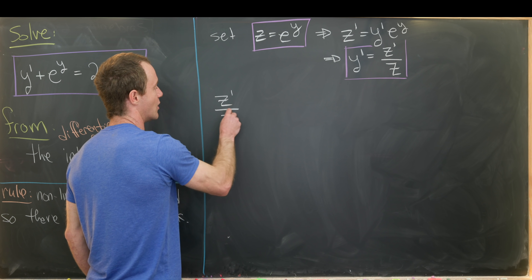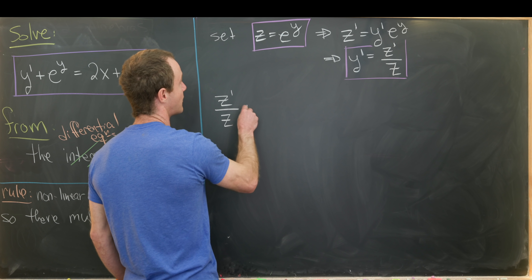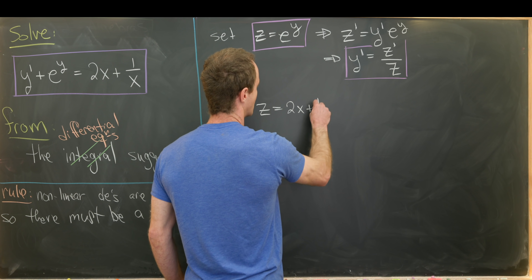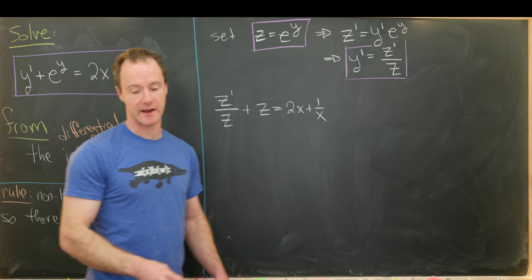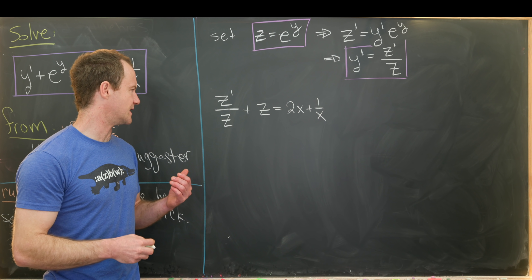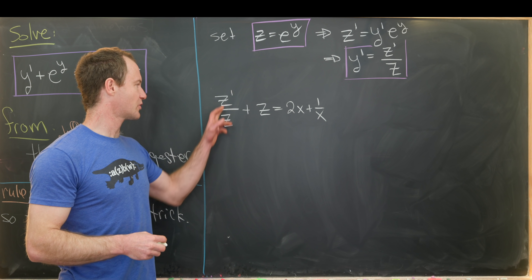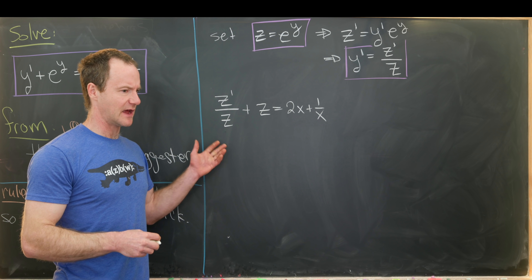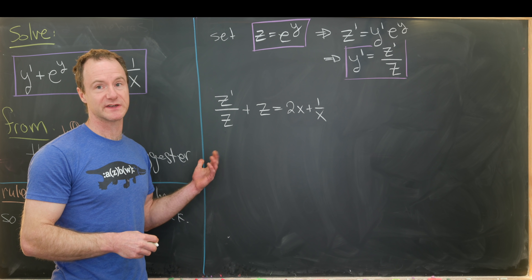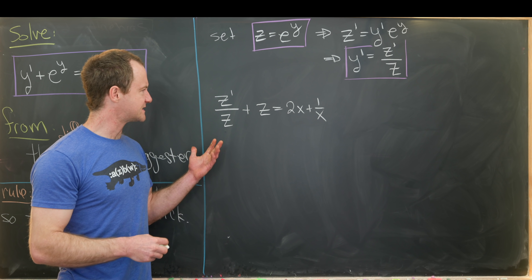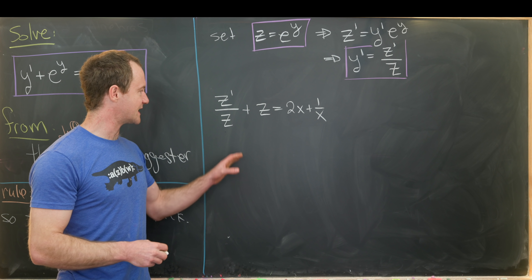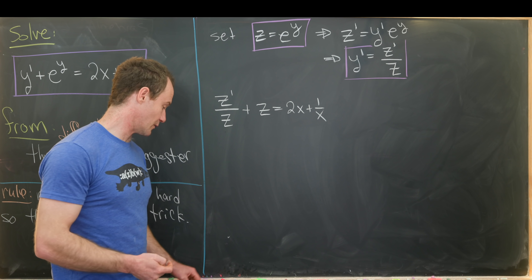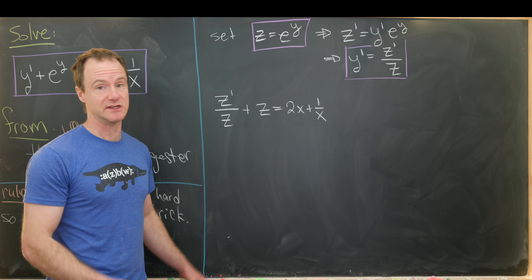That gives us z prime over z plus z equals 2x plus 1 over x. Now, this z prime over z term gives a hint — it looks like we're approaching the derivative of a reciprocal function. We can make that transformation by multiplying the entire equation by 1 over z.